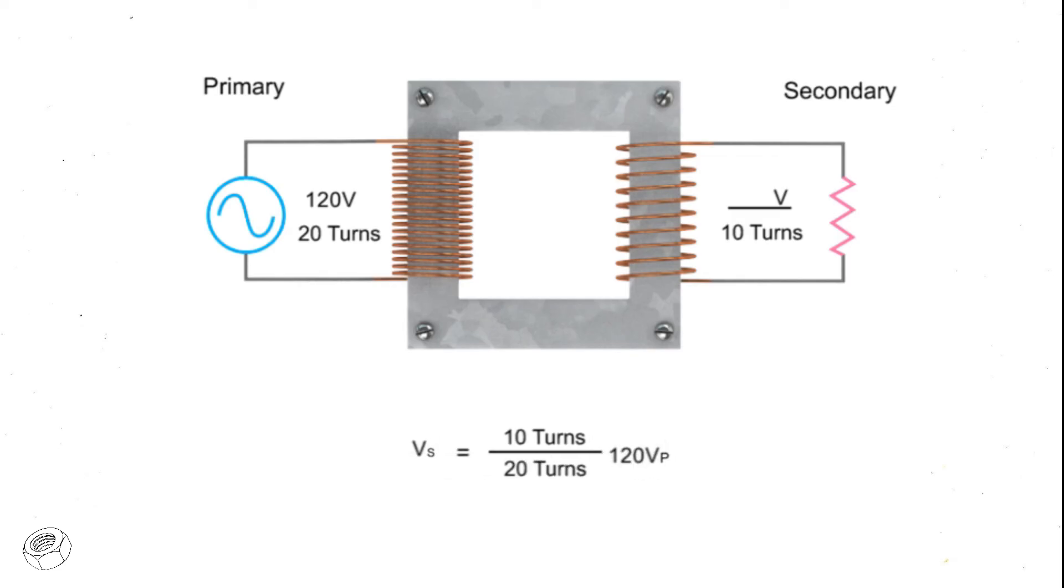Rearranging the formula and then dividing 10 turns by 20 turns, we get 0.5 multiplied by 120 volts. This results in a calculated step-down voltage of 60 volts.